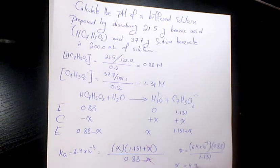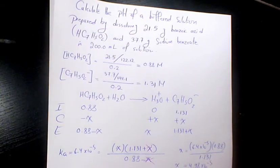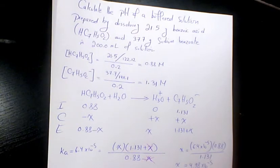That would be 4.98 times 10 to the power of negative 5. So pH will be negative log of 4.98 times 10 to the power of negative 5.